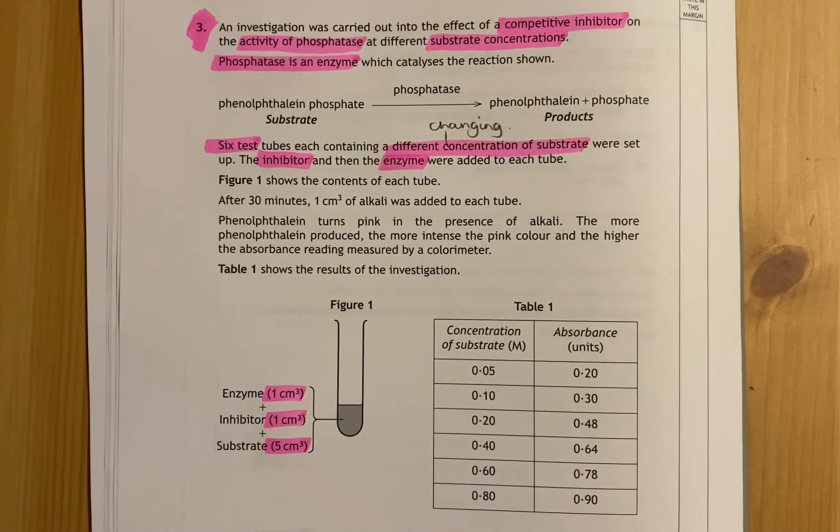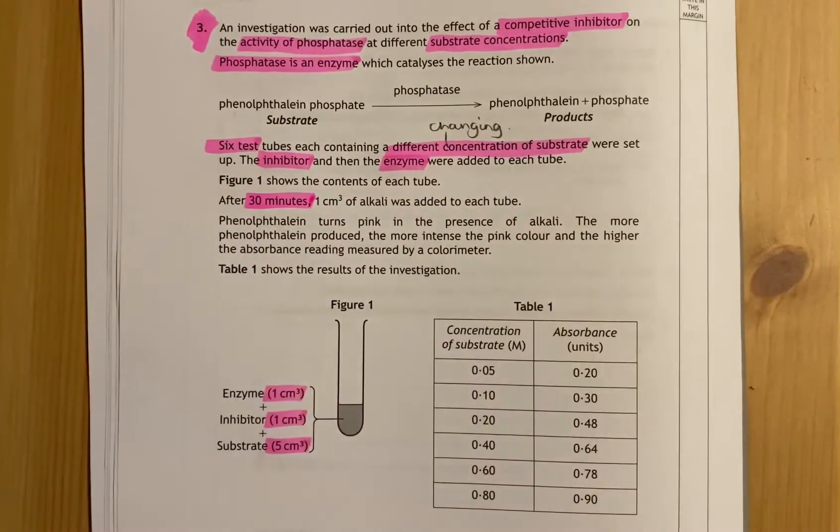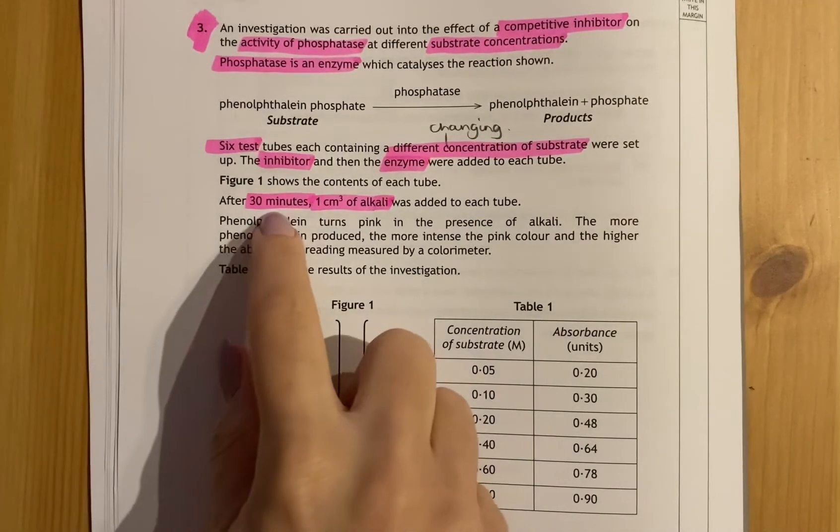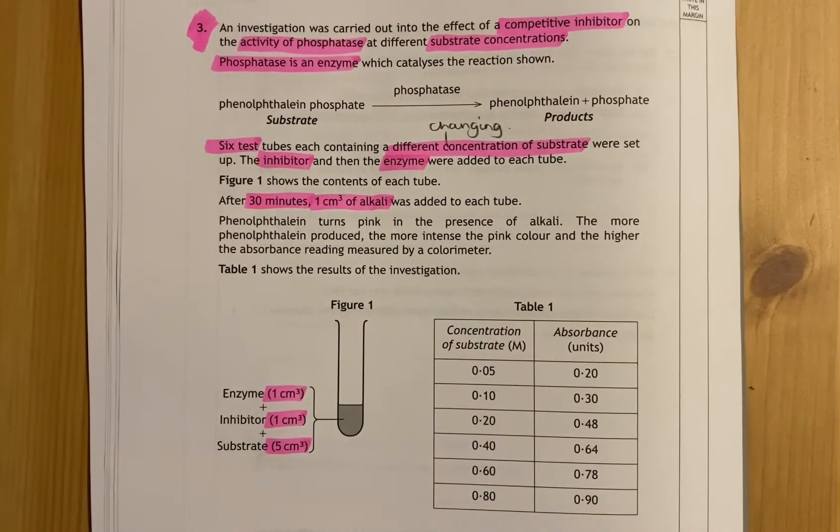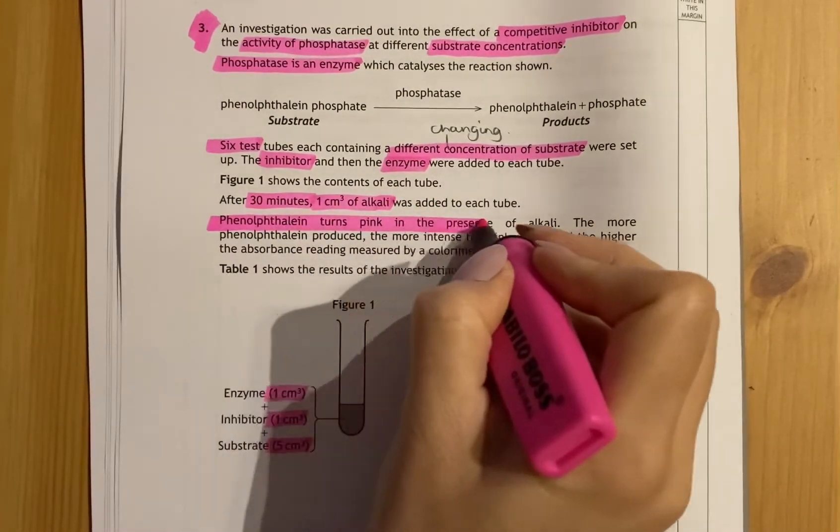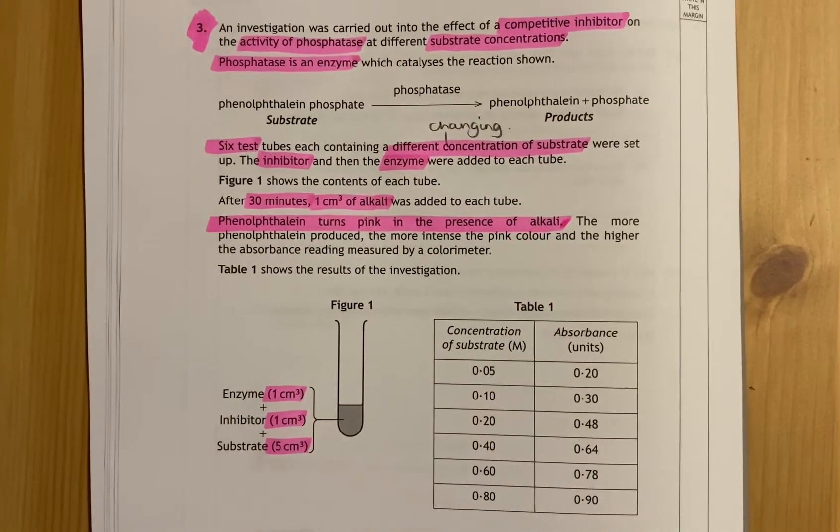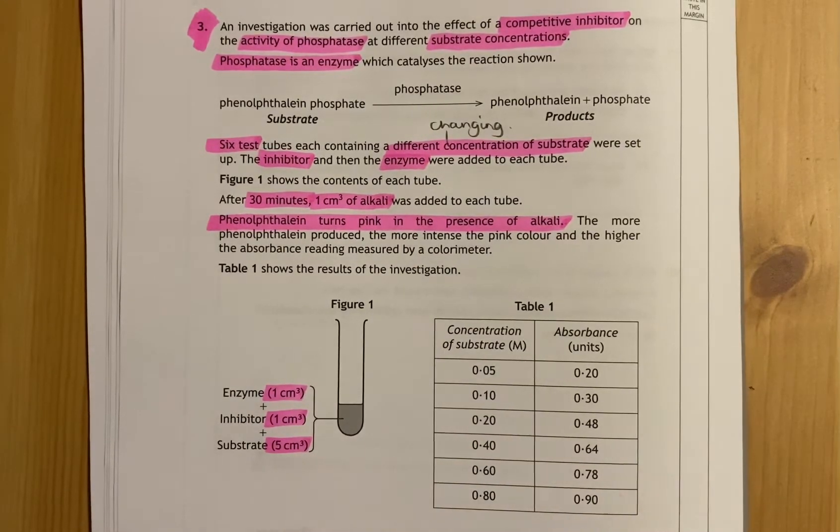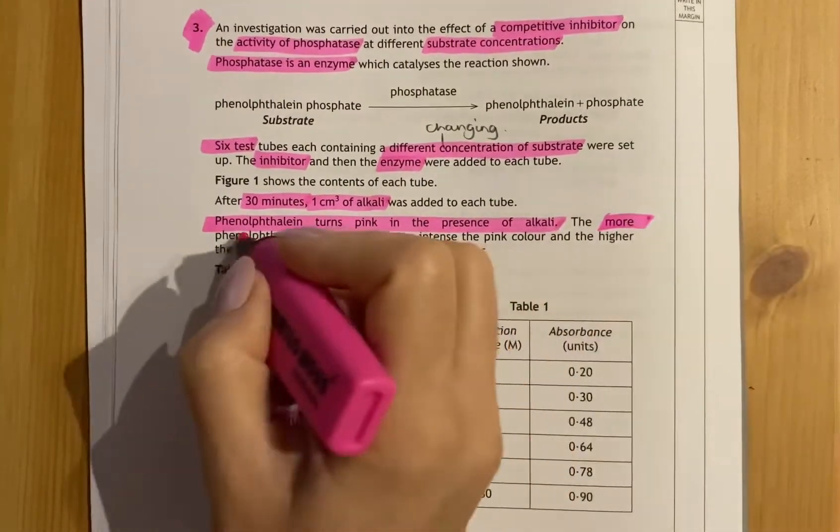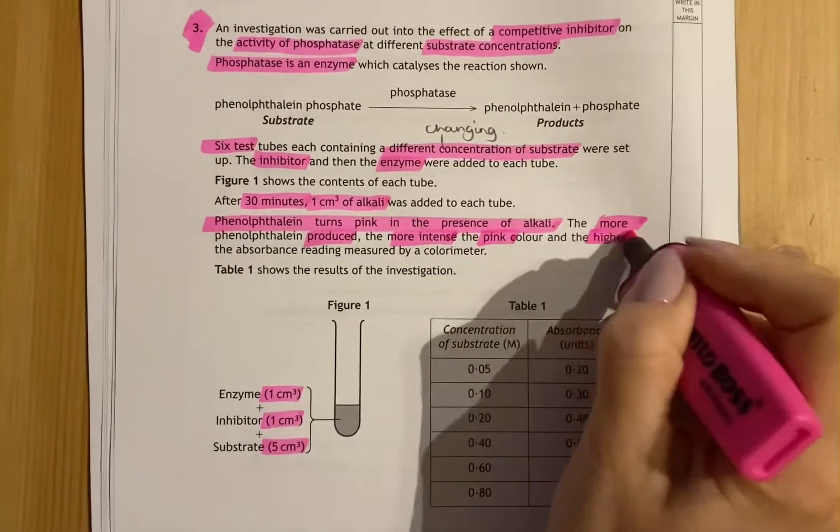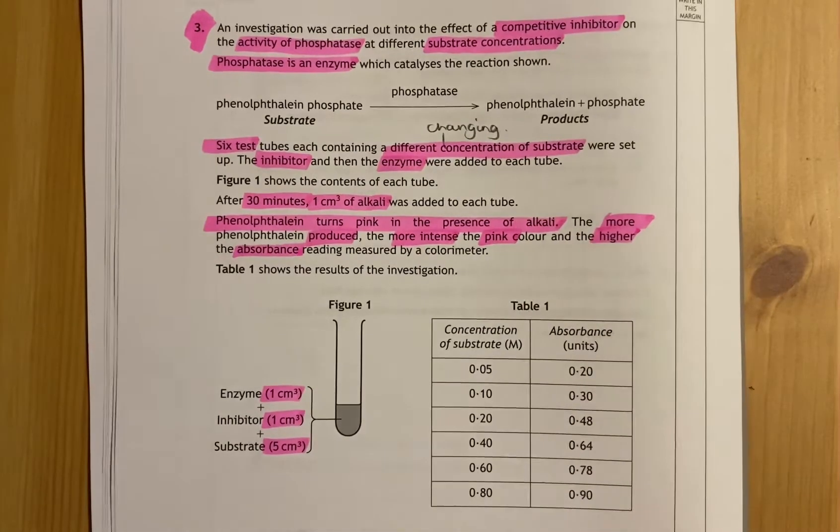That means if they ask you about variables kept constant, you can't state these ones because they've already told you they're kept the same. After 30 minutes, one centimeter cubed of alkali was added. The next bit says phenylphthalene turns pink in the presence of alkali. So basically, if after 30 minutes phenylphthalene is produced, it will turn pink.